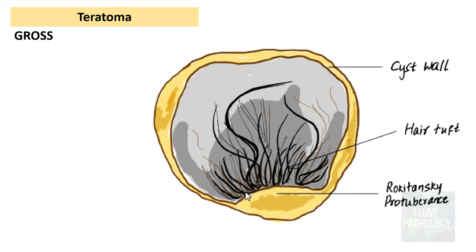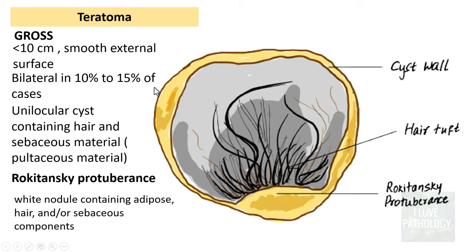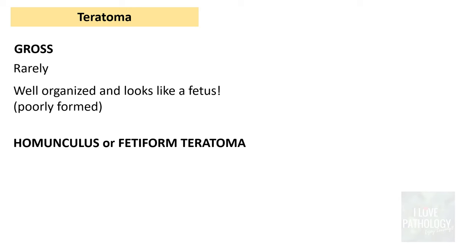Grossly, teratomas are often less than 10 centimetres in size, with a smooth external surface. Most often unilateral, but in 10 to 15 percent of cases they can be bilateral. They are unilocular cysts containing hair and sebaceous material — a thick, oily, greasy material also called feltaceous material. You also see a protuberance on one part of the cyst wall inside, called Rokitansky's protuberance — a white or yellowish nodule containing adipose tissue and/or sebaceous components. Very rarely, teratomas can contain a well-organized component resembling a poorly formed fetus; these are referred to as homunculus or fetiform teratomas.